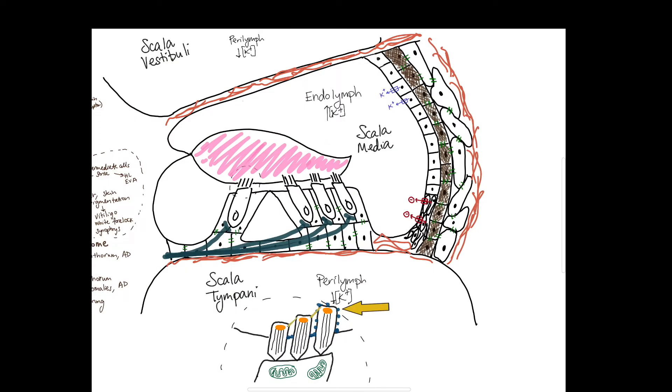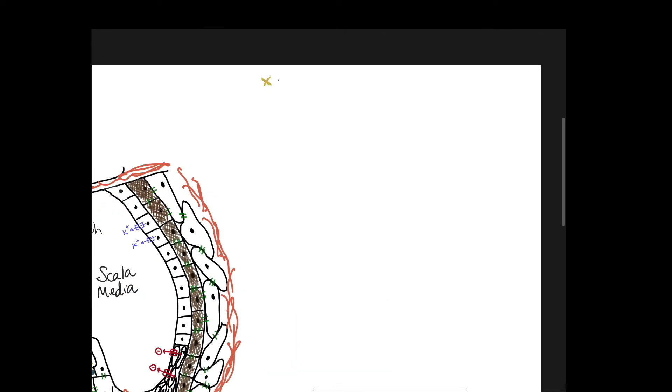The next syndrome involves genes in three different locations. First are tip links, second are ankle links of the stereocilia, and third is at the synapse of the hair cell to the afferent neurons. This is Usher syndrome and type 1 affects the tip links. So there are four genes that are commonly involved in this type. Myosin 7a, Cadherin 23, Protocadherin, and Harmonin.